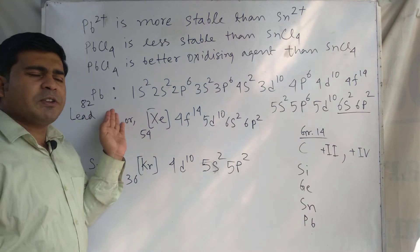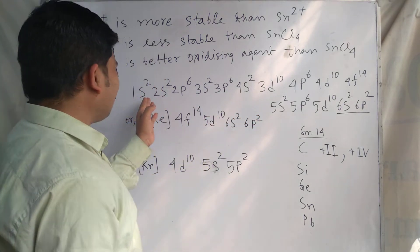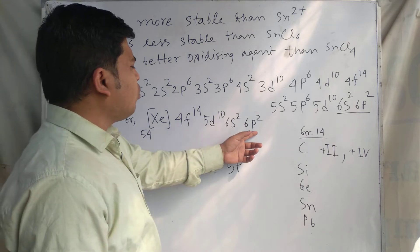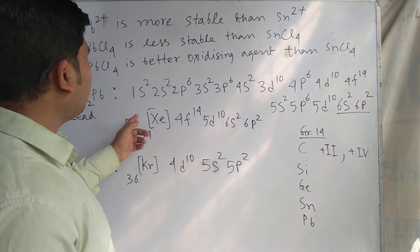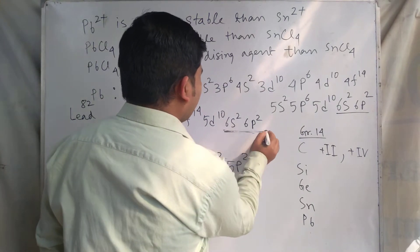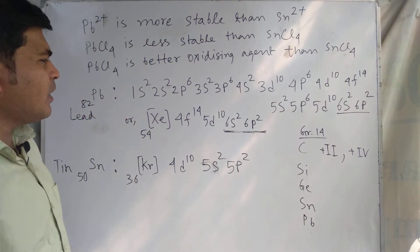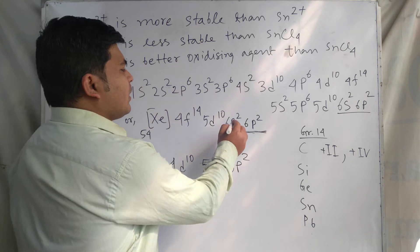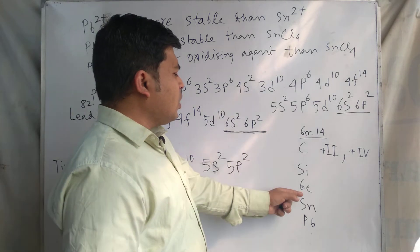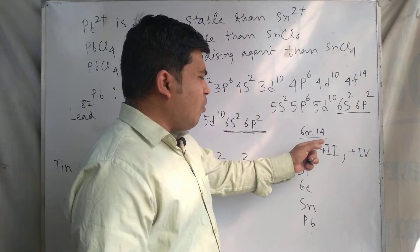Let's look at the electronic configuration of lead. In terms of orbitals — 1s, 2s, 2p, etc. — and in shorthand notation, the electronic configuration of lead shows 6s² and 6p² in the last two orbitals. The number of electrons in these last two orbitals is 2 + 2 = 4.